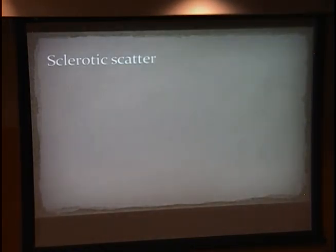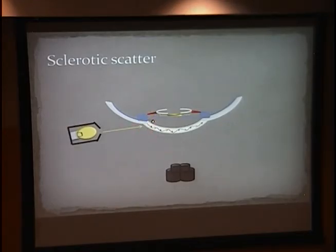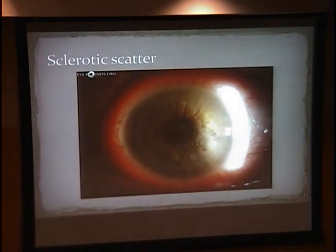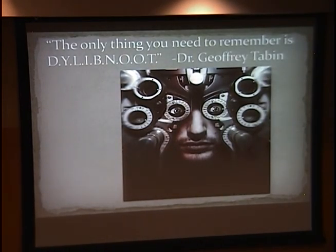The last technique I'm going to talk about is sclerotic scatter. We take our light source at a very strong angle and shine it directly into the limbus. What ends up happening is total internal reflection, just like an optic fiber — this cornea is going to light up very diffusely across the entire surface. The only way you'll see light come out is if there's a lesion that changes the angle, so light can actually escape and come to us. You can see the whole cornea lit up, revealing a subtle corneal opacity you wouldn't otherwise have been able to see. Here's a good example of map-dot-fingerprint dystrophy. And as Dr. Tabin always says, the only thing you really need to remember is the acronym DELIVNUT.